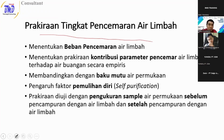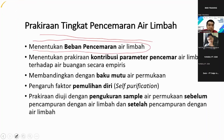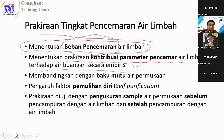Baik, Bapak. Jadi, untuk perkiraan tingkat pencemaran air limbah, ini bisa dilakukan dengan beberapa cara. Kadang muncul di pertanyaan: bagaimana cara menentukan tingkat pencemaran air limbah? Yang pertama, dengan menghitung beban pencemaran. Ini kalau yang tadi, seperti industri kertas, itu biasanya di hasil analisanya sudah langsung otomatis ada perhitungan beban pencemaran di hasil ujinya.